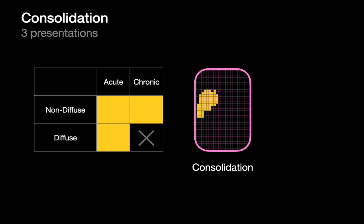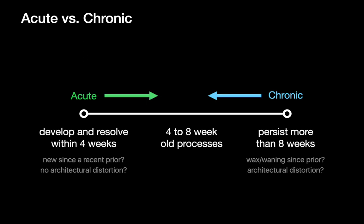Chronic-diffuse patterns of consolidation would probably be incompatible with life, so they're not one of the patterns we're going to likely encounter. For this talk, we're going to be discussing the approach to acute-diffuse consolidation — consolidation that is symmetric and bilateral. We're using four to eight weeks as our threshold to distinguish acute from chronic consolidation.